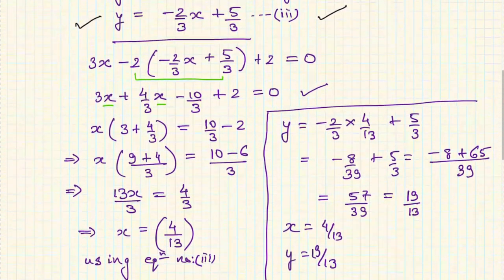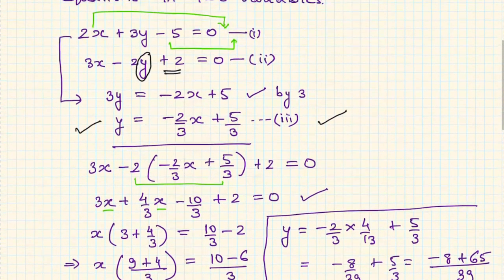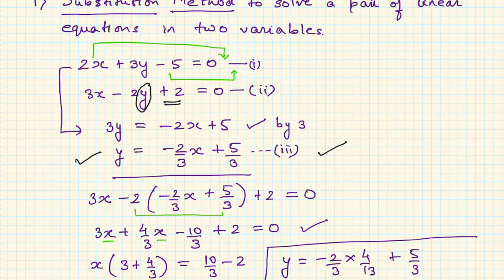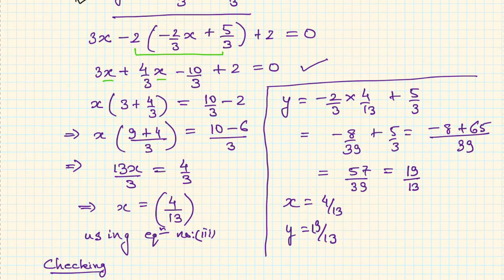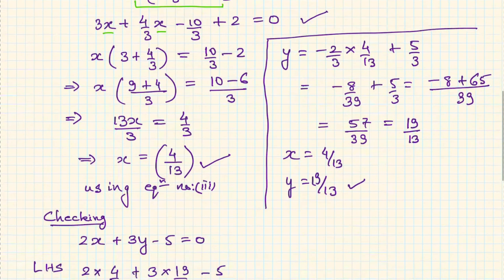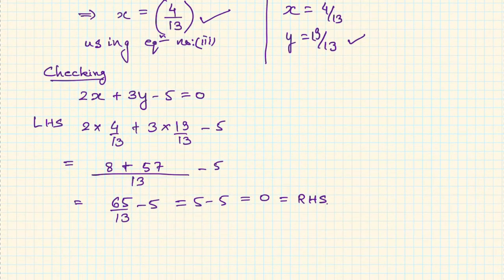So what did we learn? In the substitution method: first, take one equation and express one variable in terms of the other — here y in terms of x, but you can also express x in terms of y. Then substitute into the second equation to get an equation in one variable, solve it, and use that value in any of the equations above to find the other variable. Always check your answer to confirm it is correct.